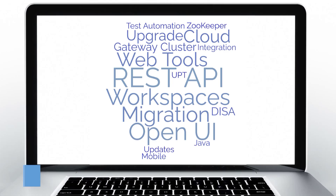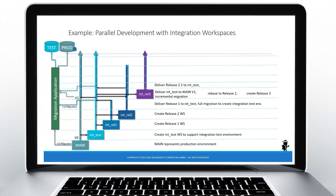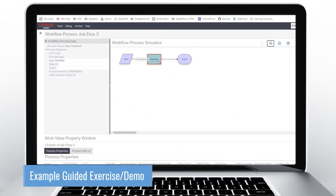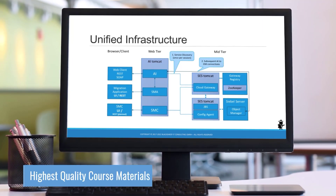Learn more with clear, precise instructor presentations. Siebel 22 has a mid-level release. They want to push to integration test and then incrementally migrate that content to the test database. Learn better with comprehensive exercises and demonstrations. Now the next step to be executed is the business service, and we can click simulate next. This executes the business service, and we can inspect the output in the workflow process data panel. Learn faster with high-quality course materials.